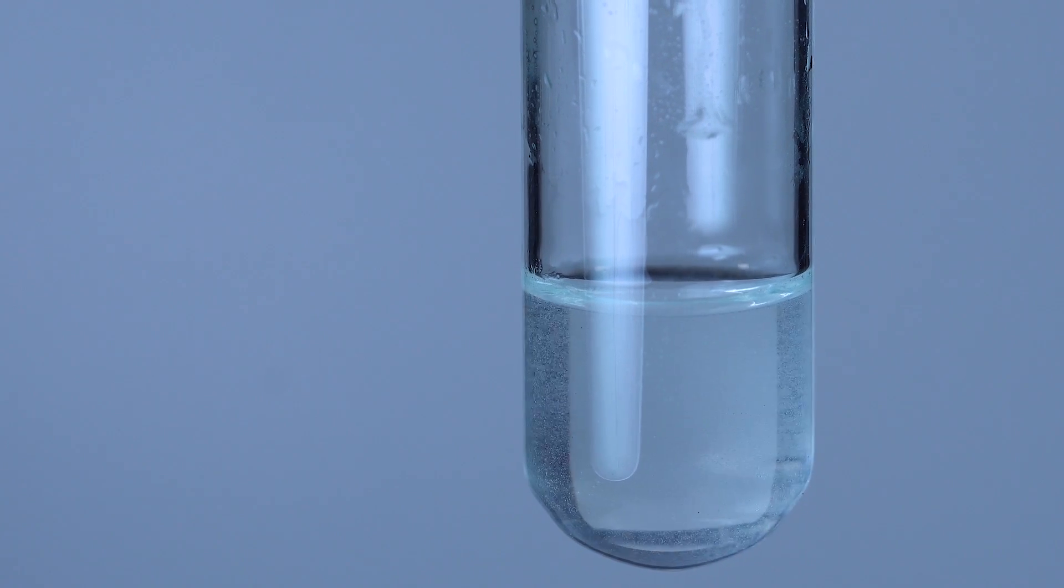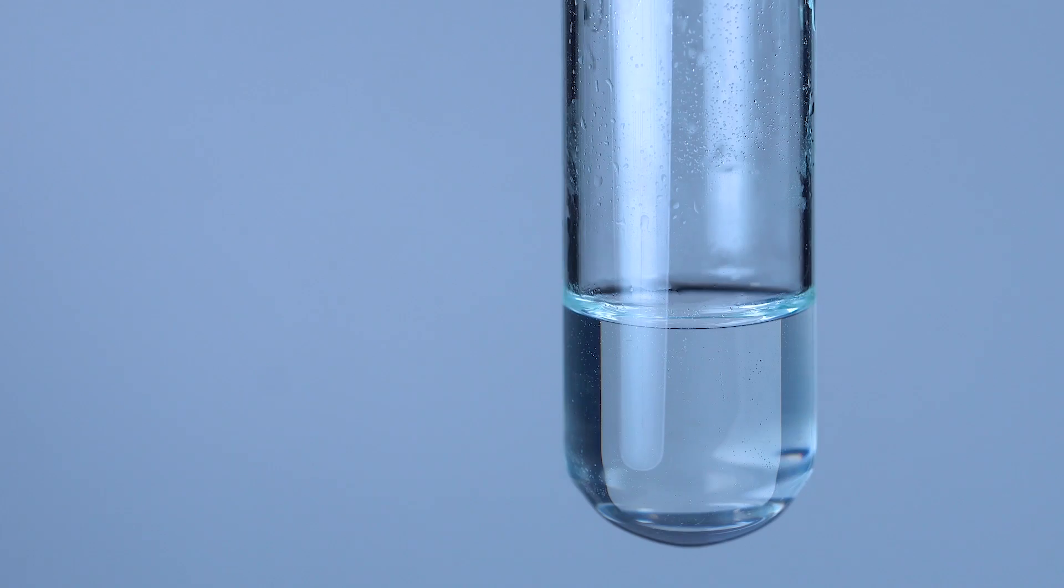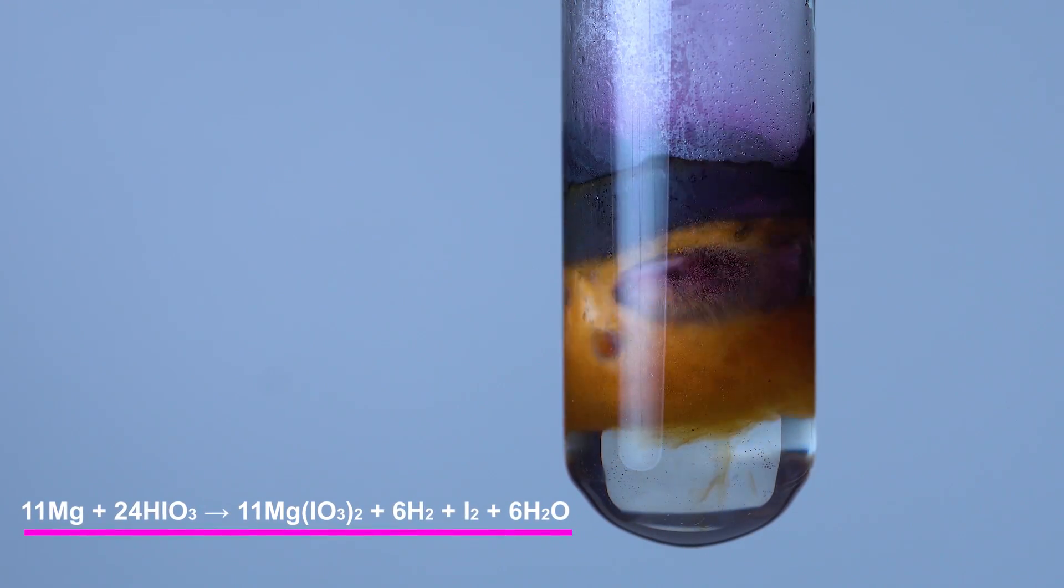Iodic acid is a strong oxidizer and, like nitric acid, gives different reduction products depending on its concentration. In this case, you may see the formation of elemental iodine.